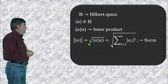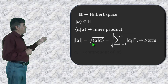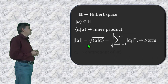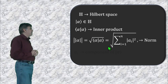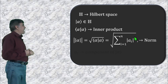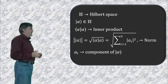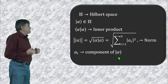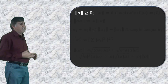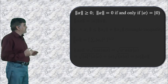The norm of alpha is written by putting the vector into parallel lines, and it equals the square root of the inner product of alpha with itself, which can be expressed as the square root of the sum of the modulus squares of the components a_i, where a_i is called the component of alpha. The norm of a vector in Hilbert space is always a non-negative real number.